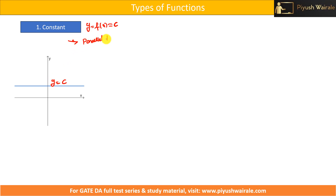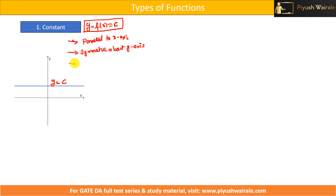It is a horizontal line parallel to the x-axis and symmetric about the y-axis. Remember this point. The constant function generates the same output irrespective of the input. What is the domain of this function? Domain means all real numbers — it can take all real numbers. But what is range? Range is restricted to c only. It does not matter what value you take as input, you will get the same output c.